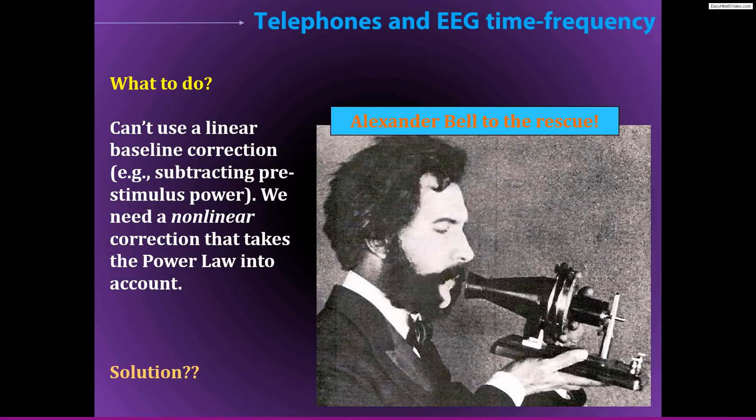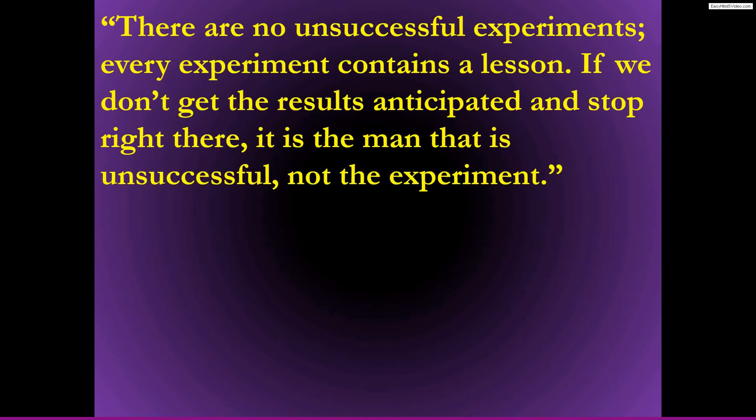Before I get into the details, there's two quotes from Alexander Bell that I like to show, because I find them inspiring and also interesting. Well, this is a long time ago, so we could say the person that is unsuccessful, not the experiment. I like that quote a lot, because there is some pressure in science, and in particular in publishing, on what we would consider to be successful experiments, which means P less than 0.05, or whatever the statistical threshold is. But I think, arguably, a successful experiment means that we've learned something, not necessarily that we've gotten statistically significant results.